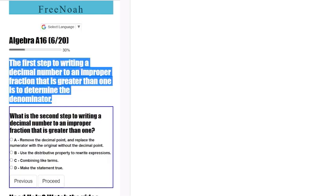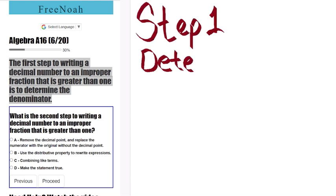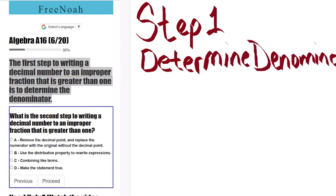The first step to writing a decimal number to an improper fraction that is greater than one is to determine the denominator.